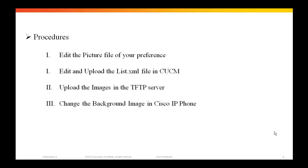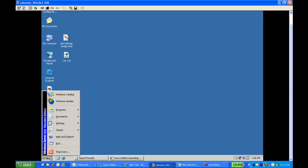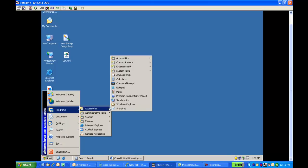Let's see how to edit the picture file of your preference. Select any picture of your preference which you want to apply as a background image in your IP phone, and if required, you can edit it. In this video, I am going to explain how to edit your picture and add some text of your choice. I am going to use Paint for editing — you can use any editing software. Go to Start, Programs, Accessories, Paint.